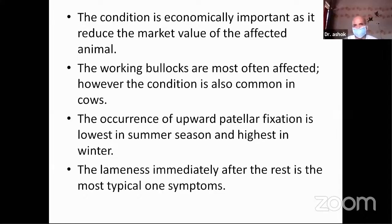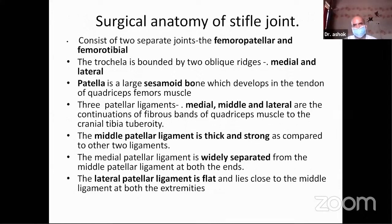Before we go for the surgical cure of this disease condition, we must know the anatomy of the stifle joint. The stifle joint consists of two separate joints: one is the femoropatellar joint, that is between the femur and the patella, and another is the femorotibial joint. The trochlea is bounded by two oblique ridges, medial and lateral. The patella is a large sesamoid bone which develops in the tendon of the quadriceps femoris muscle, and there are three patellar ligaments — medial, middle, and lateral.